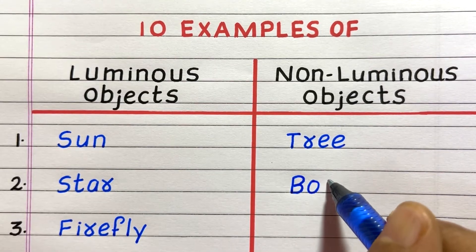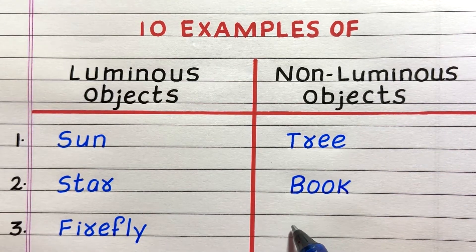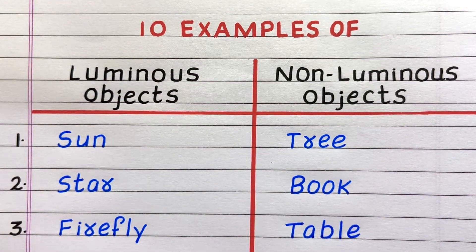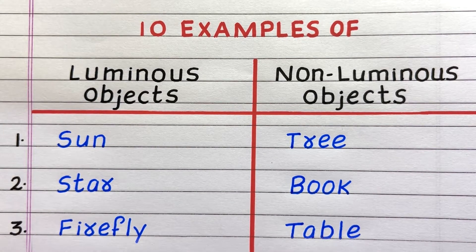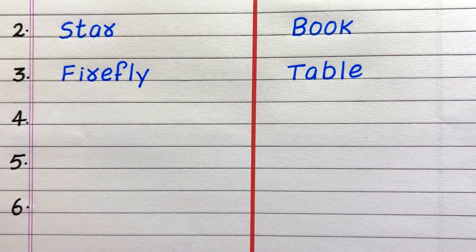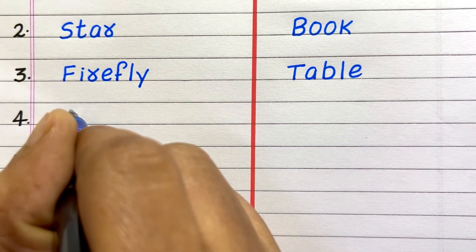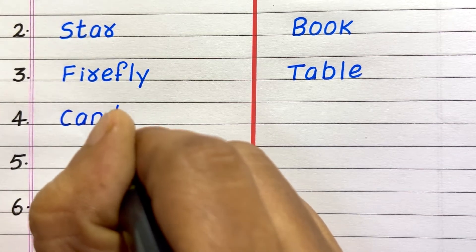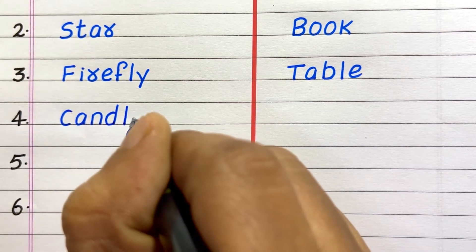Second non-luminous object is book. Third is table. Fourth example of a luminous object is candle.